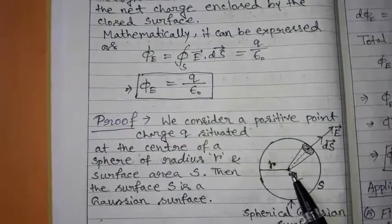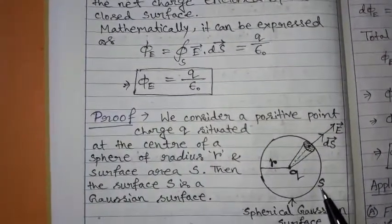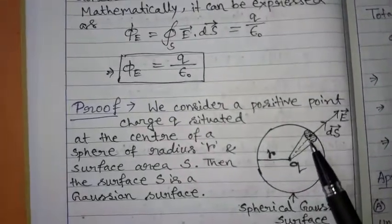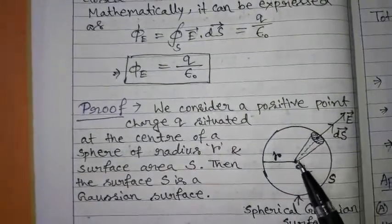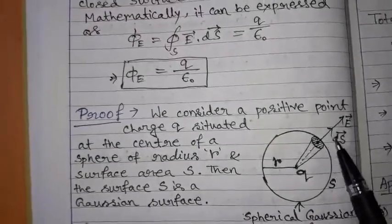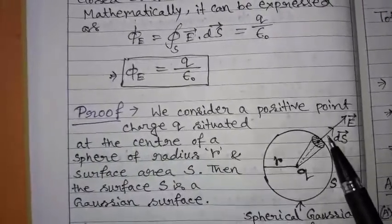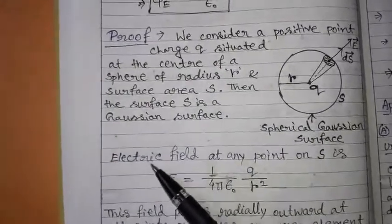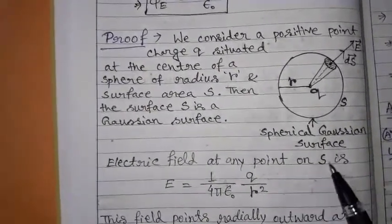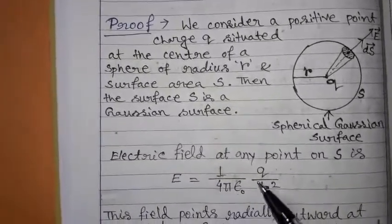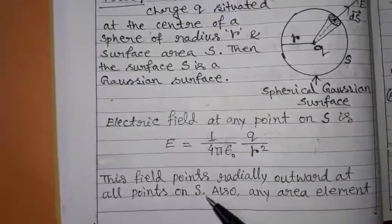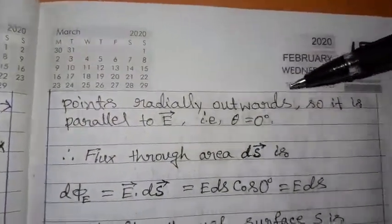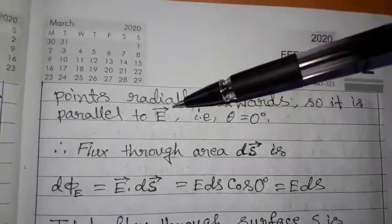Proof: We prove Gauss's theorem for a spherical surface. We consider a positive charge q at the center of a sphere of radius r. The total surface area of the sphere is S. We consider a small elemental area δS. The electric field E for this point charge at the center is directed radially outward. The surface vector and the electric field are parallel, so θ equals 0 degrees. The electric field at any point on the surface S is E equal to 1 by 4πε₀ times q by r².